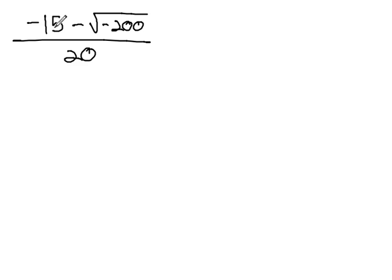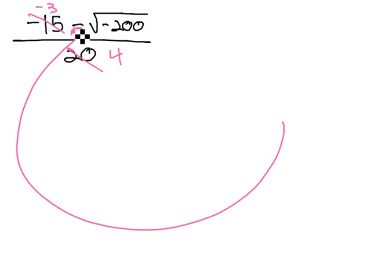A common error I see students do is they want to reduce the 15 and the 20, and get negative 3 and 4. The problem with this is we are not allowed to do any reducing if there is any adding or subtracting in the fraction.